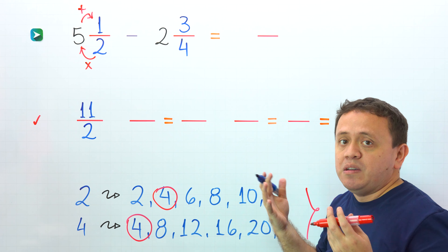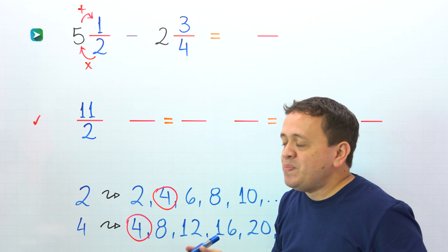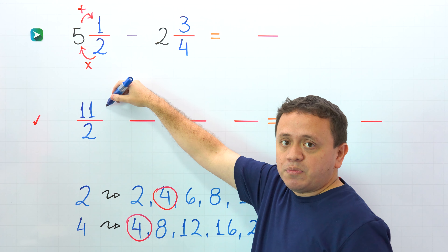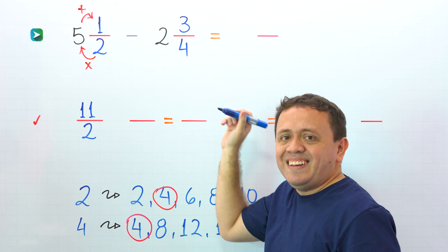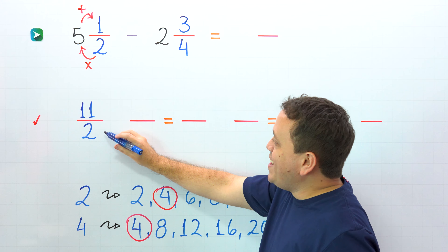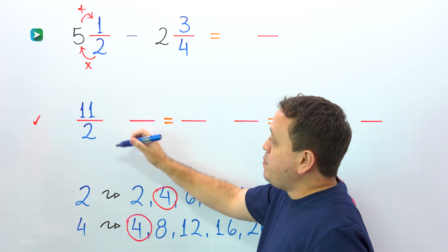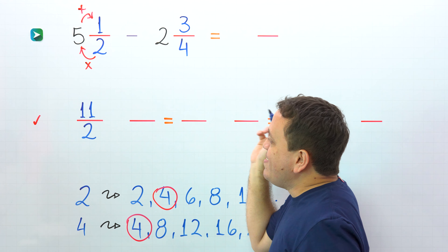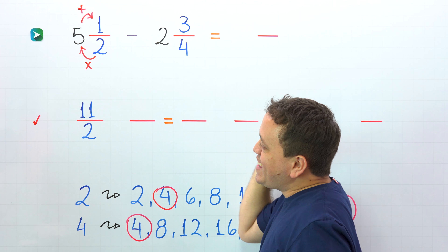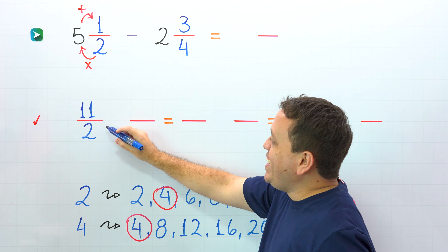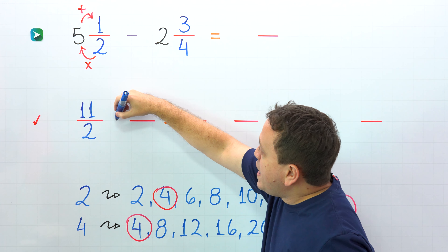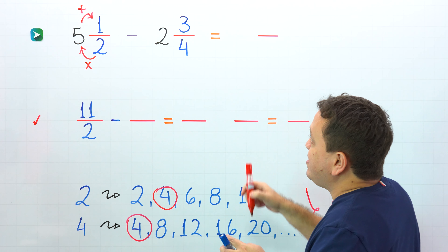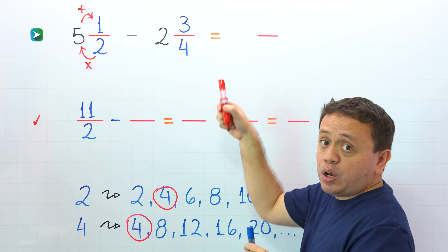At this point, we should remember improper fractions. An improper fraction is a fraction where the numerator, the top number, is greater than or equal to the denominator, the bottom number. 11 halves is an improper fraction, given that the numerator 11 is greater than the denominator 2. Then we have the minus sign, and we will do the same with 2 and 3 fourths.